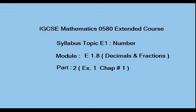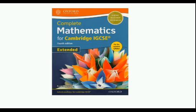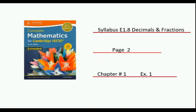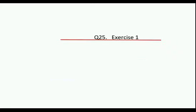Hello and welcome to IGCSE Mathematics 0580 extended course syllabus, topic E1 Number, module E1.8 which is about decimals and fractions. This is part two, in which we're going to solve exercise one of chapter number one. We are using Complete Mathematics for Cambridge IGCSE Extended Syllabus written by David Rayner. Exercise one of chapter one is on page number two of this book, and this is question number 25 of exercise one.